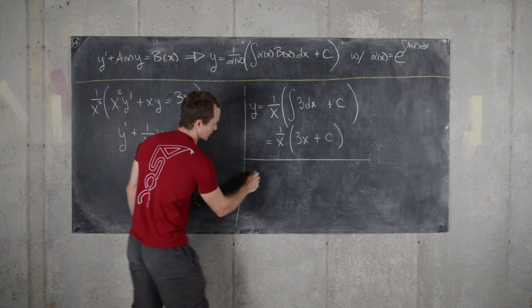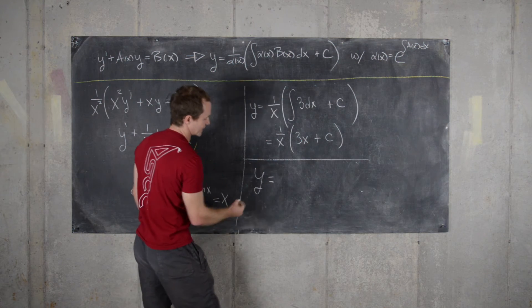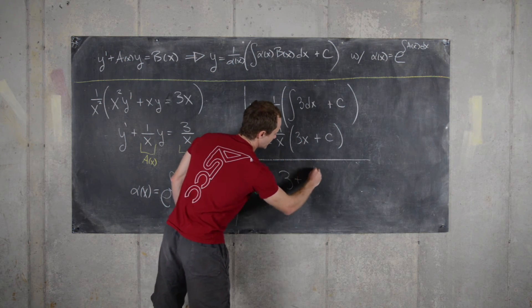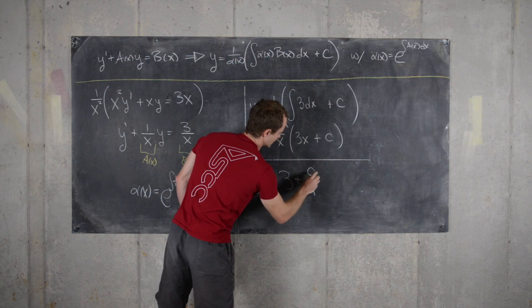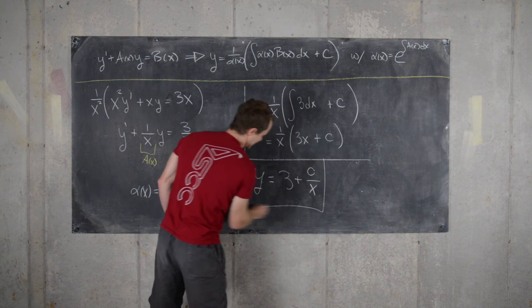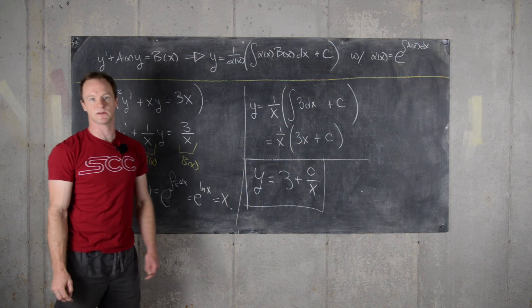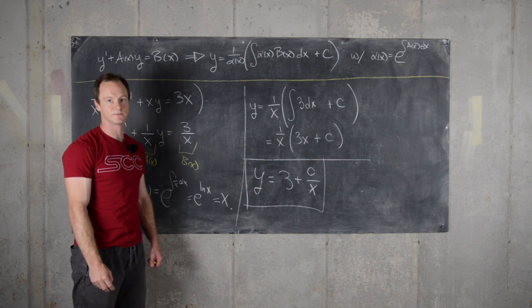In other words, our final solution is 3 plus some constant over x. Now if we had an initial condition, we could solve for that constant, but here we're just finding a general solution.